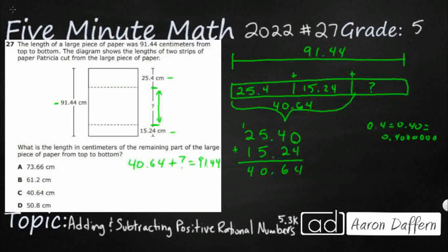Let's just subtract 91.44 and my little subtotal there, 40.64. And if you are thinking that, you would be correct.